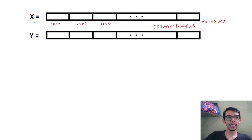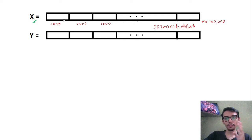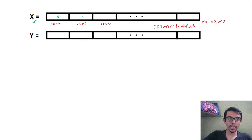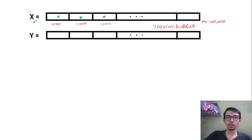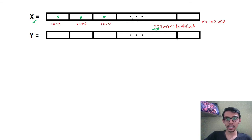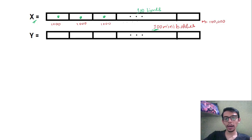Instead of passing the entire dataset, we pass one mini batch, train the model, update the weights, then pass another mini batch, train the model, update the weights, and so on until we complete all 100 mini batches. By the time our model has seen the entire dataset, we would have already made a lot of progress by updating our weights 100 times. This also reduces training time and eliminates the out-of-memory error.